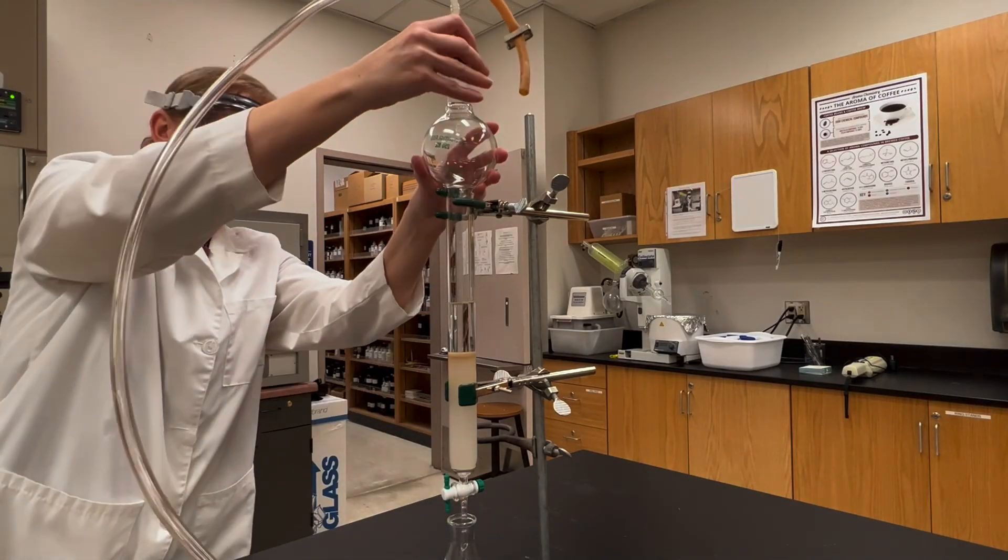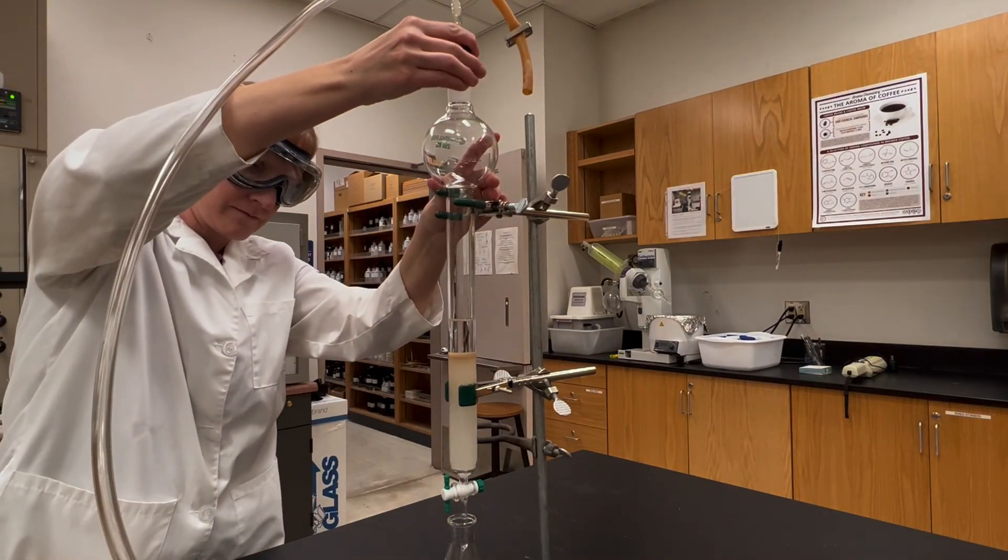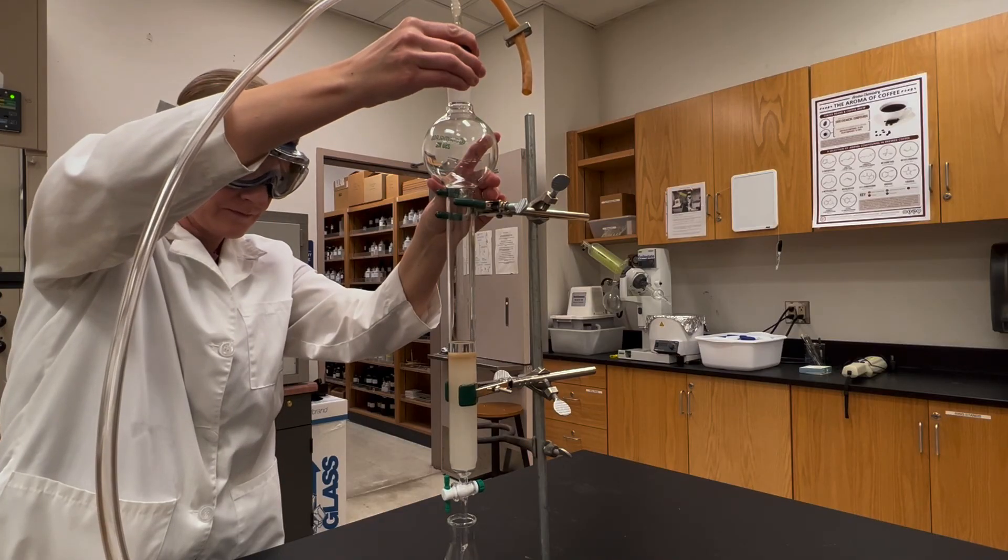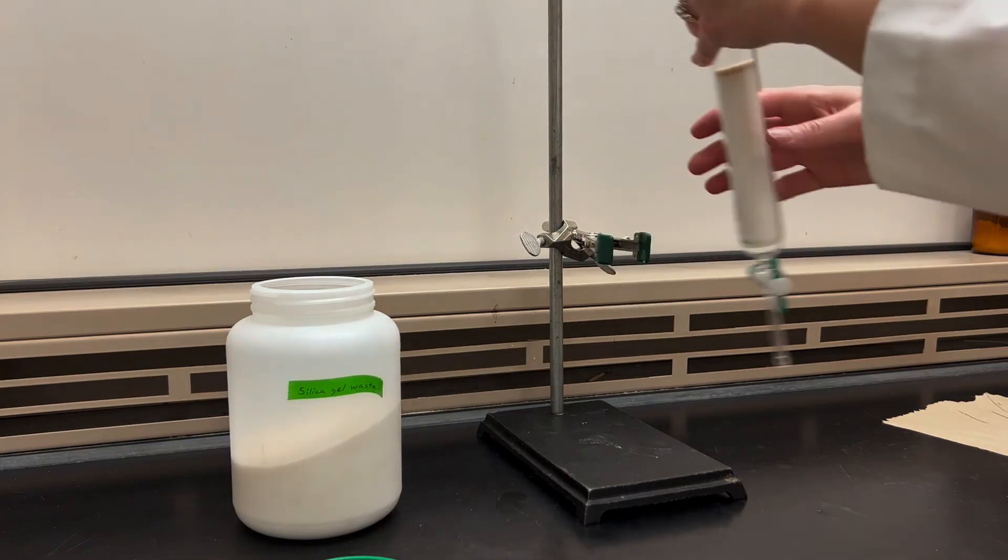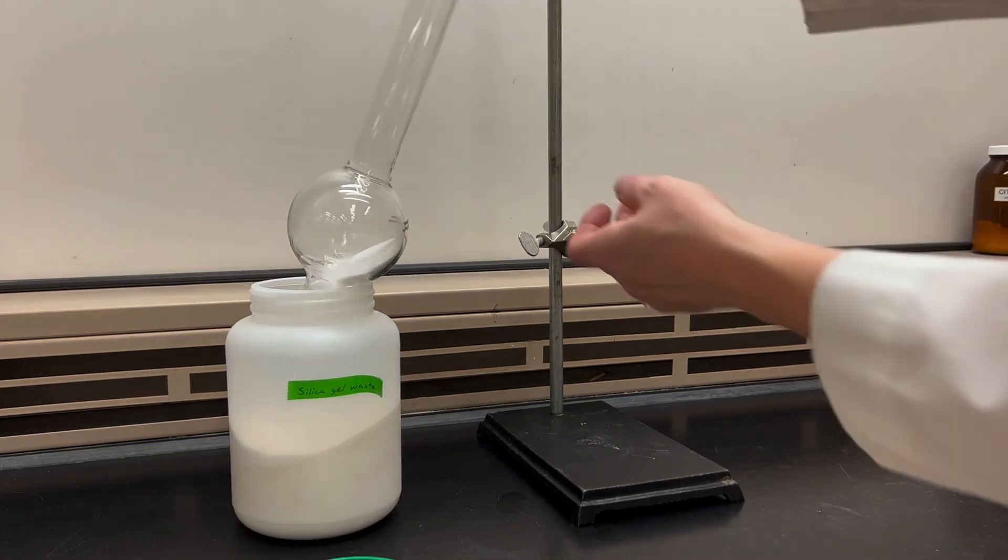To clean up, you want to use air pressure to drain the liquid from the used column and completely dry it out. Then once dry you can pour the used silica into a waste jar.